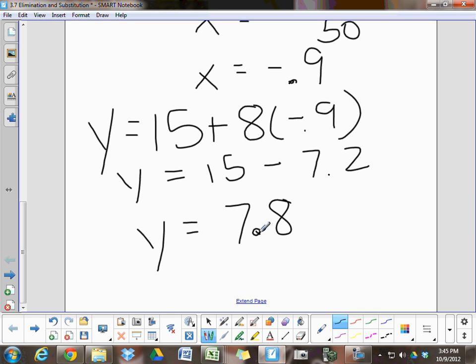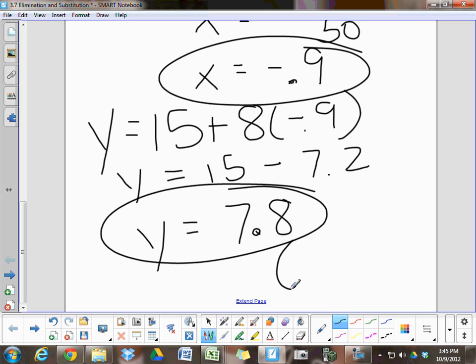So, we have a solution, an ordered pair, with x equal to this, y equal to that. So, the solution would be negative 0.9 comma 7.8. And that is solving a system of equations using substitution.